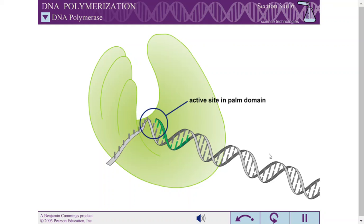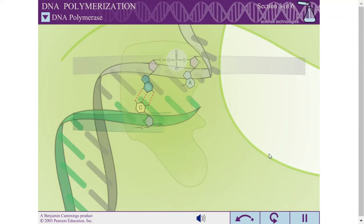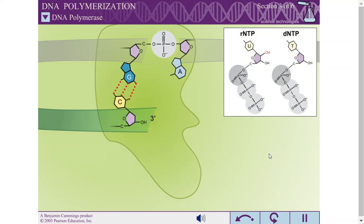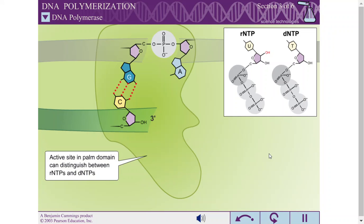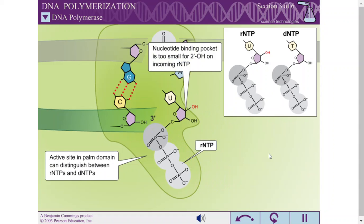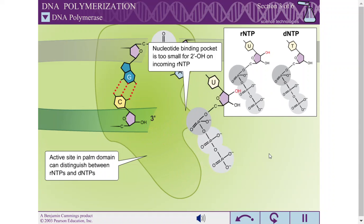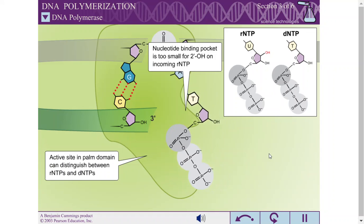The palm domain houses the active site for DNA synthesis. The active site of DNA polymerase is able to distinguish between rNTPs and dNTPs, even though rNTPs are present at approximately 10-fold higher concentration in the cell. The nucleotide binding pocket is too small to accommodate the presence of a two-prime hydroxyl on the incoming nucleotide, allowing the polymerase to sterically exclude rNTPs.